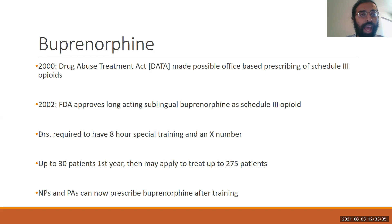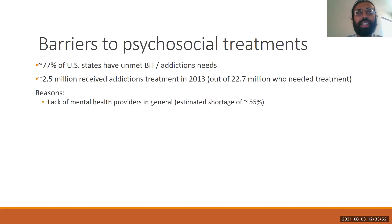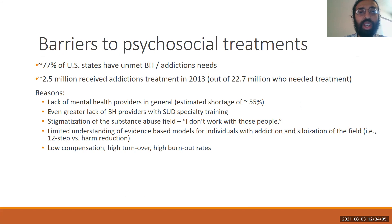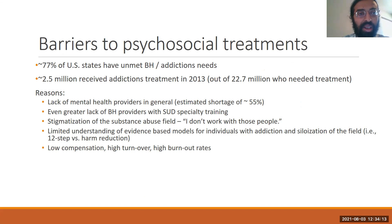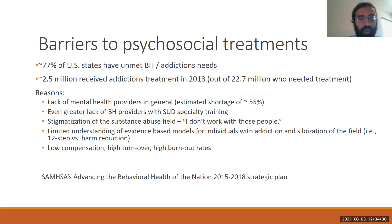Then in 2018 with the SUPPORT Act, prescribing was extended to include other nurse specialties like clinical nurse specialists, nurse anesthetists, and nurse midwives — all to improve access. But significant barriers to treatment remain. Looking at psychosocial treatments, there is a vastly unmet need. In general, there is a lack of mental health providers in the United States — an estimated shortage of 55% — and an even greater lack of behavioral health providers with substance use disorder specialty training. Stigmatization plays a major role. There may also be limited knowledge, and combined with low compensation, high turnover, and high burnout rates, this creates a major barrier to why people often don't receive treatment.